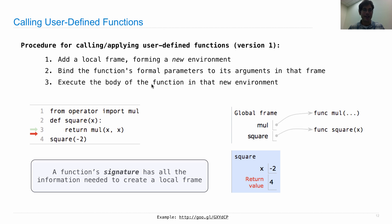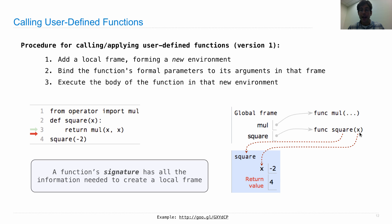A function signature is important because it contains all the information needed to create the local frame. The signature — between 'def' and the colon — is copied over when we create the function: the function name lets us label the local frame, and the formal parameter x is the name we bind to the argument value. That's why the function signature is important — it tells us how to construct this frame every time we call square.